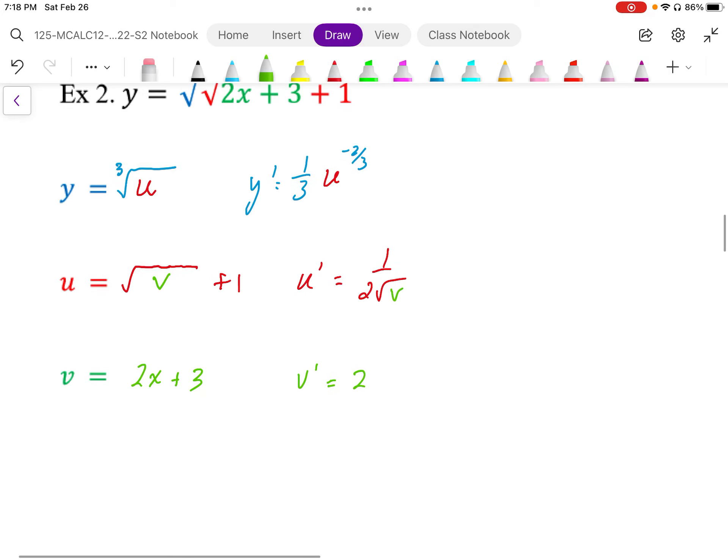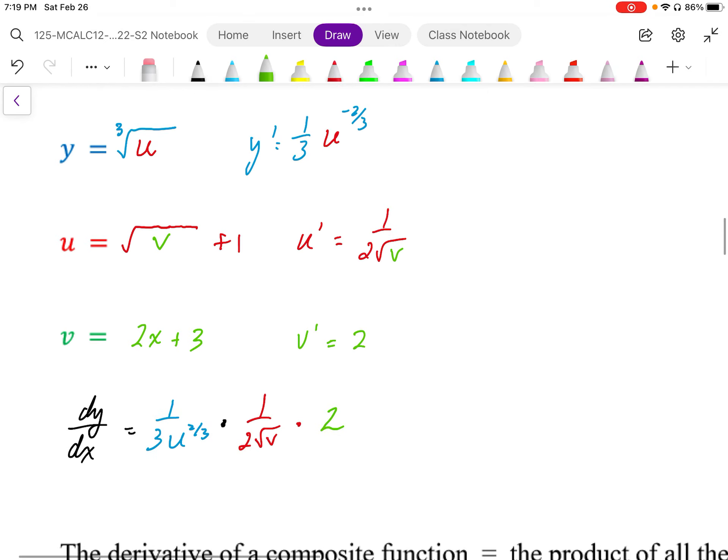So the overall rate, dy by dx, is going to just be equal to the outside rate, 1 over 3 u to the negative 2 over 3, times 1 over 2 root v times the most embedded rate, which is times 2. So it looks like this.